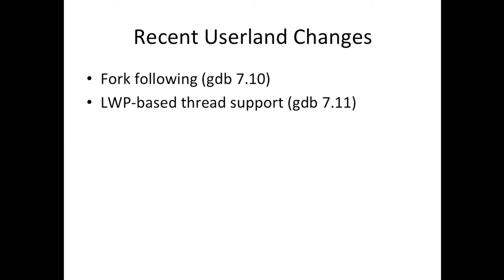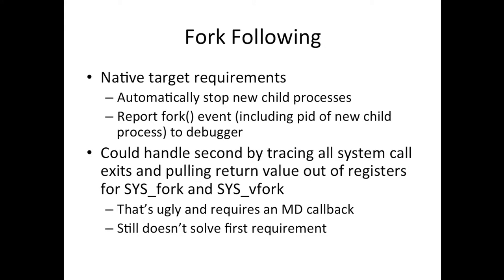The next part covers two things added to GDB over the last year or two, one of which also involved adding kernel bits to make it work better. The first is fork following, which shipped in GDB 7.10, and GDB 7.11 shipped with a native thread target that only talks to LWPs. Fork following means when a traced process forks we need to stop the new child before it starts executing, and we need to explicitly inform the debugger about the fork event with the new child's PID.